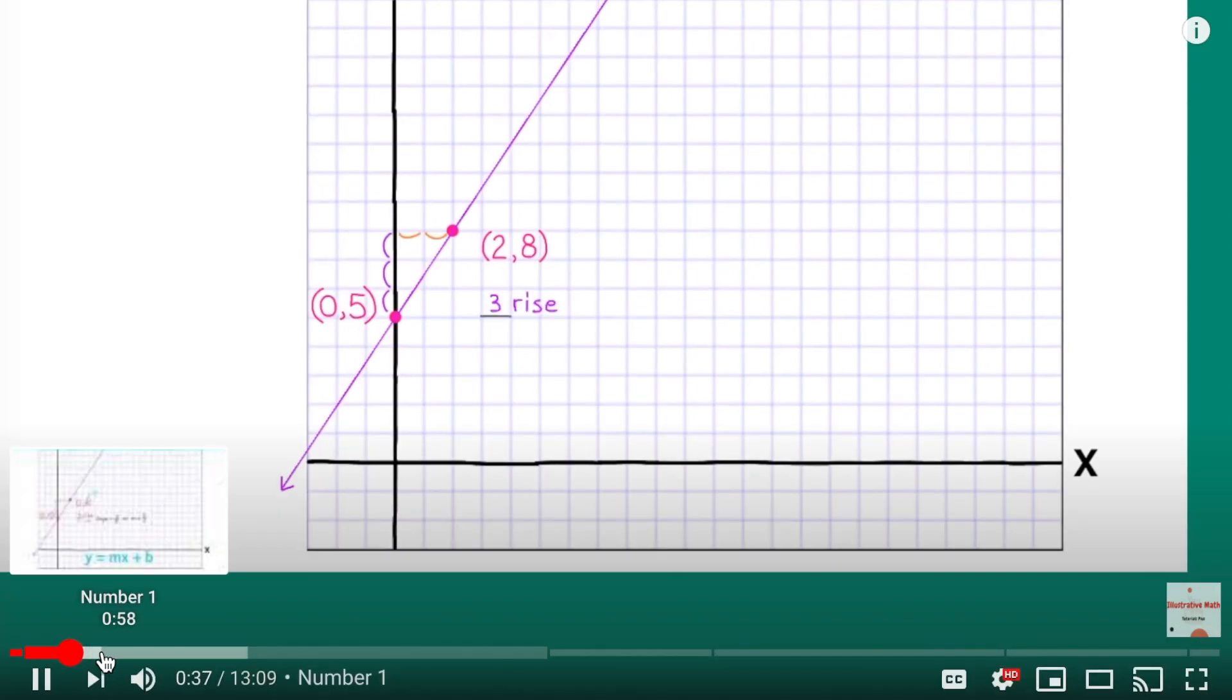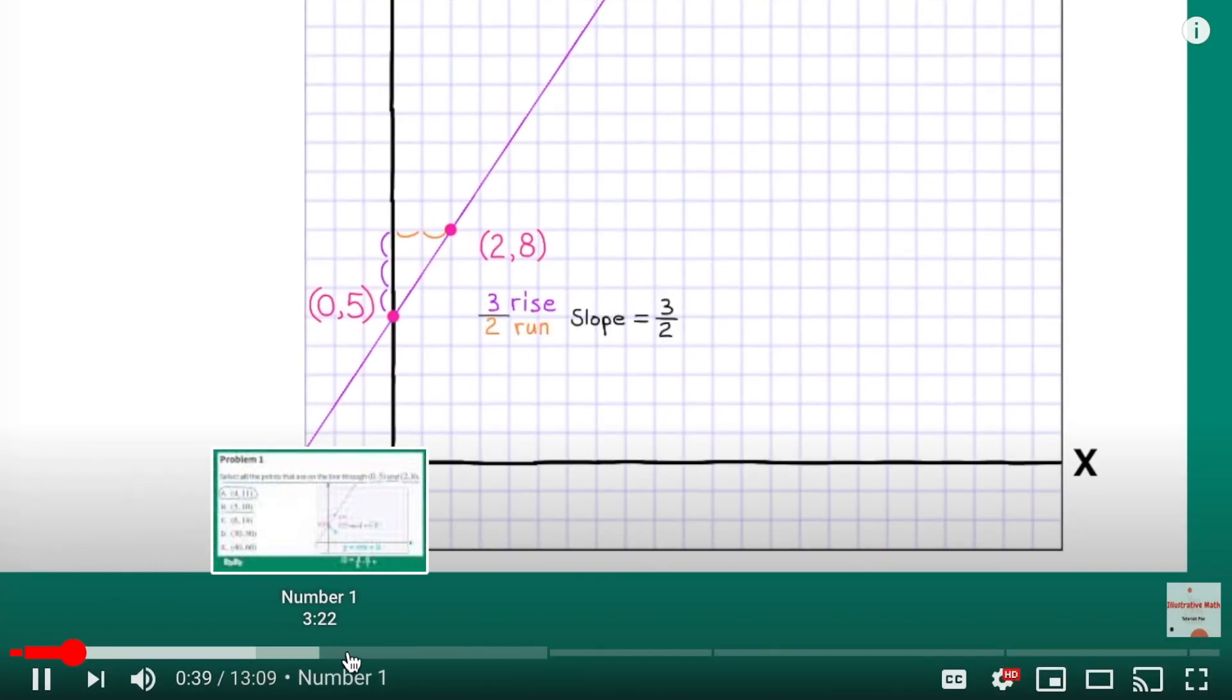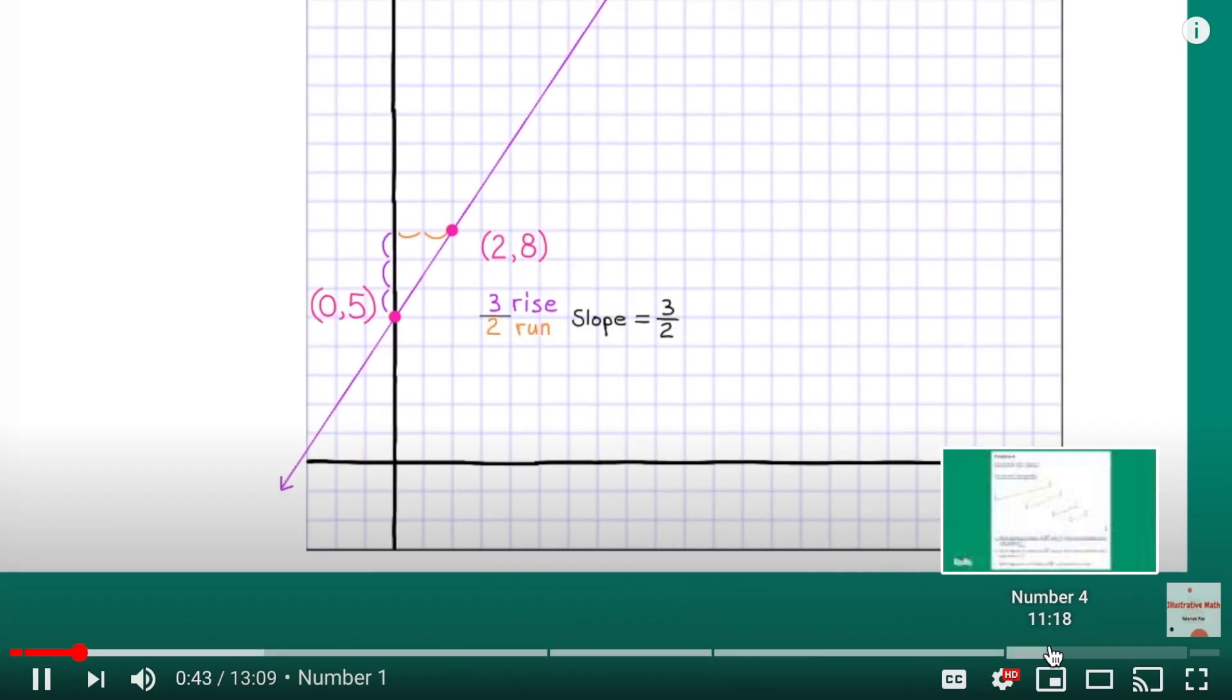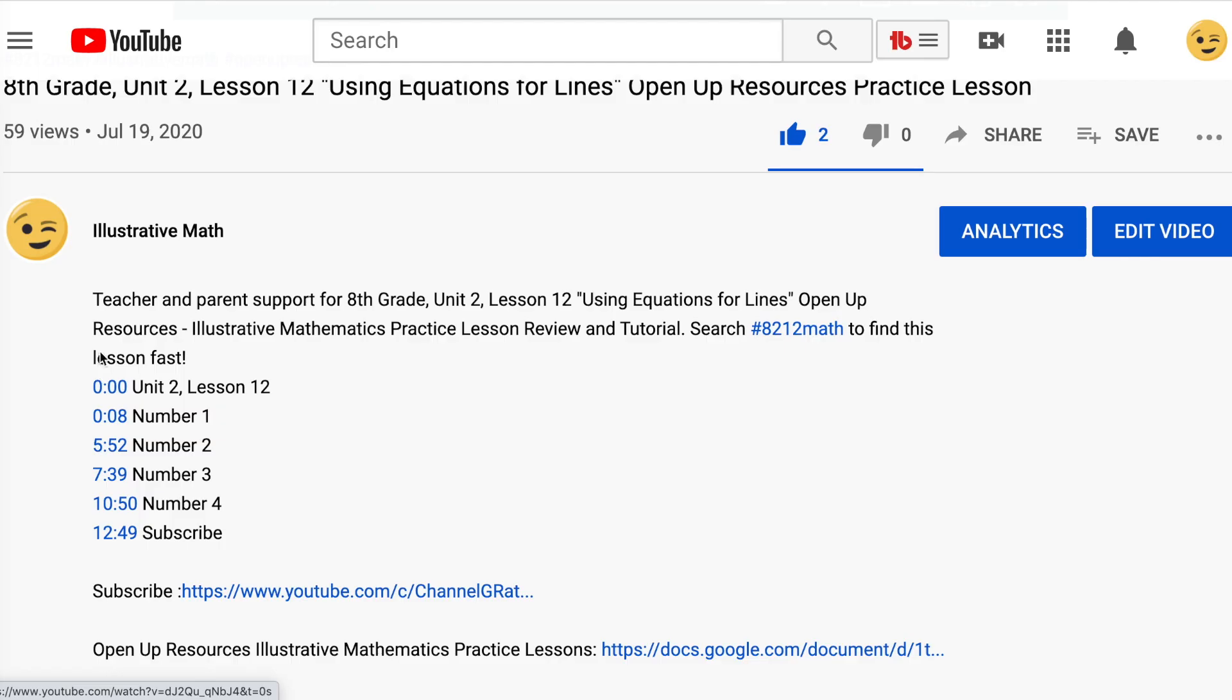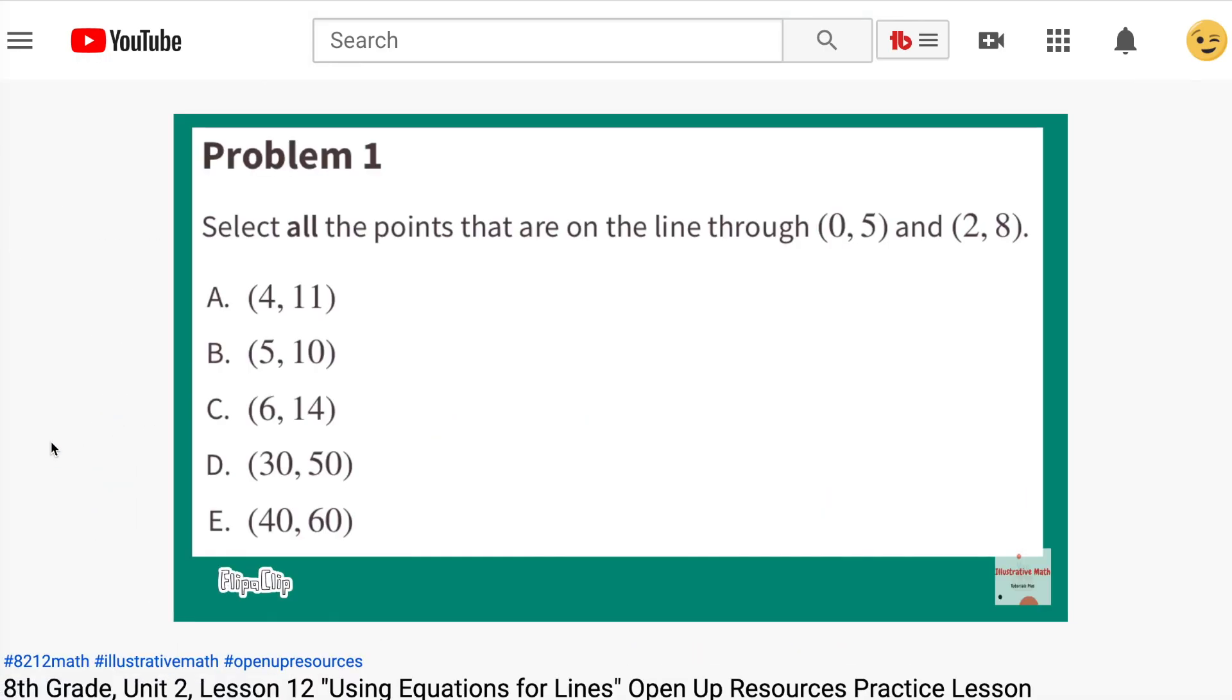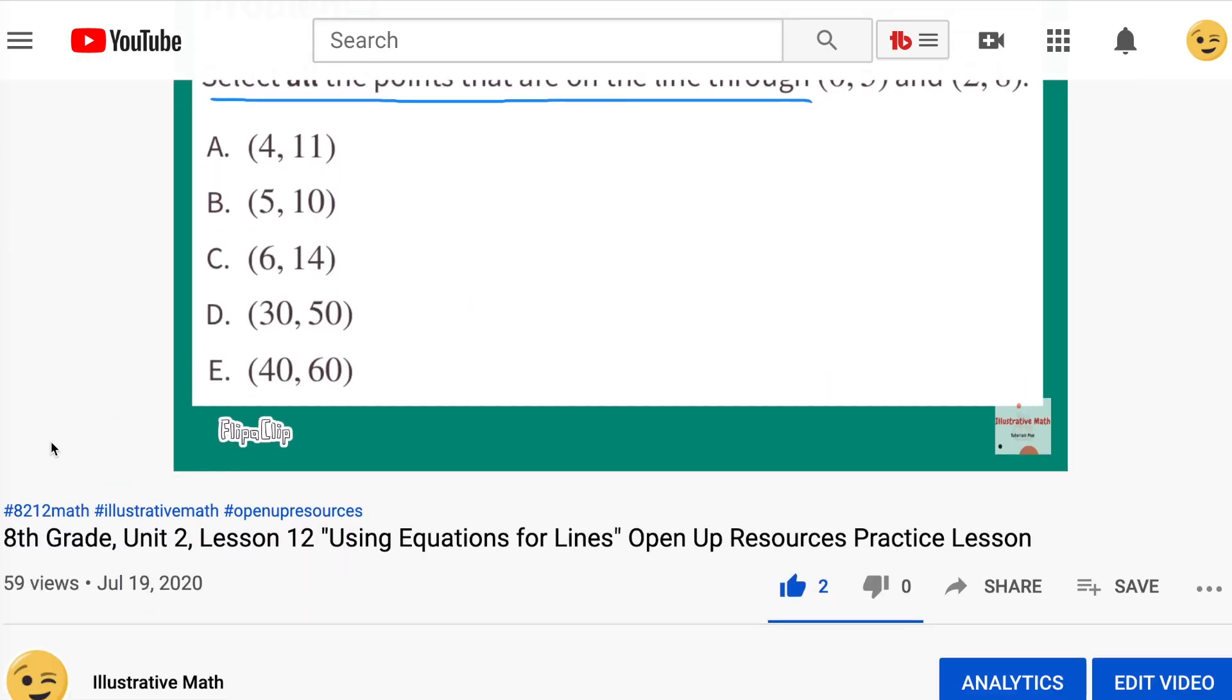Scroll along the bottom with your cursor. This shows where number one is, number two, number three, and number four. Look in the video description section and find the table of contents. Click on the timestamp next to the problem that you'd like to jump to and it takes you straight to that problem in the video.